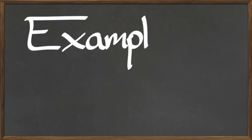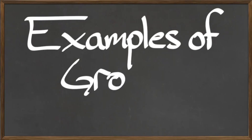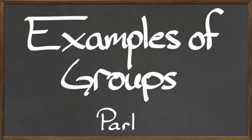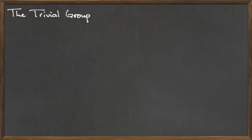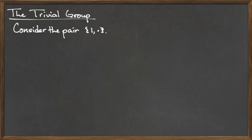In this video, we will look at Examples of Groups, Part 1. The simplest type of group is the trivial group, which consists of the element 1 under the operation of multiplication. To verify that this is a group, we need to make sure that it satisfies the three group requirements.